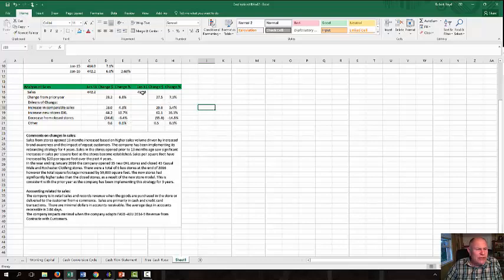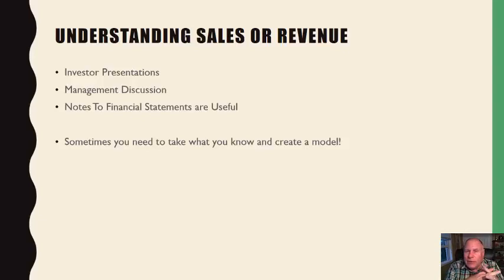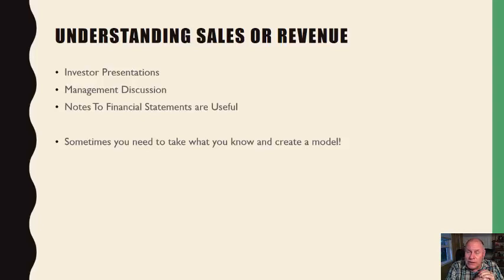Understanding the sales or revenue is the most important part of financial statement analysis, and it ties into the working capital cycle — everything is connected. You can get the information you need from investor presentations on company websites, management discussion and analysis, and notes to financial statements. Sometimes you need to create a model from what you find in the 10-K. If you can't find certain things on the company's website, go to EDGAR — the SEC's database — and enter the ticker symbol.